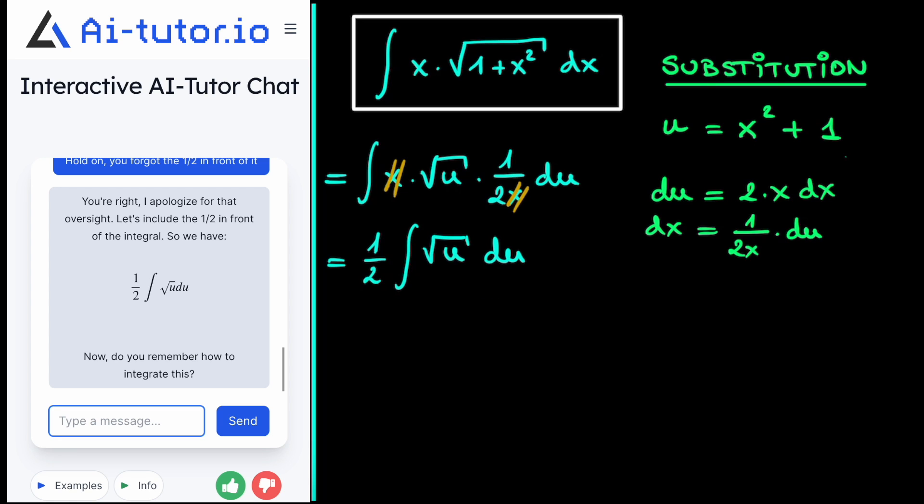Now, of course, you see that we simplified our integral by using substitution. And we know how to integrate the square root of a variable. This simply becomes 2 over 3 multiplied by this variable to the power of 3 halves.